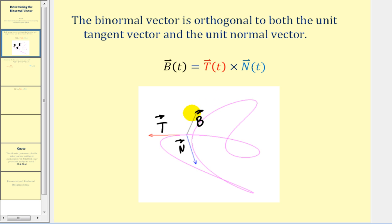The binormal vector is orthogonal or perpendicular to both the unit tangent and the unit normal vector. And since it's orthogonal to both of these vectors, it makes sense that in order to determine the binormal vector valued function, we must determine the unit tangent vector valued function crossed with the unit normal vector valued function.